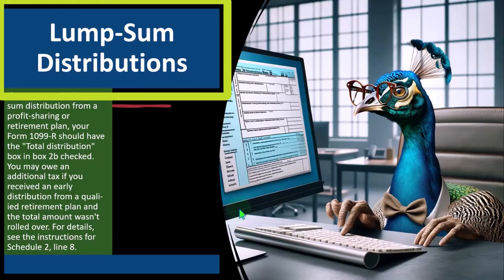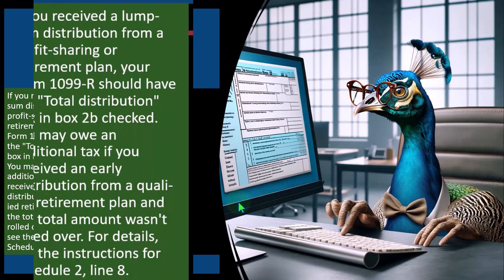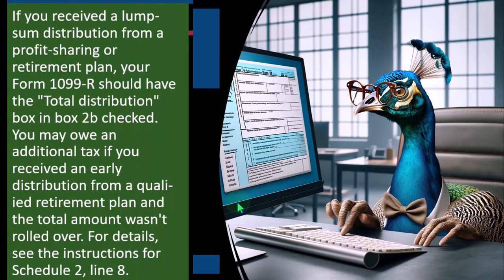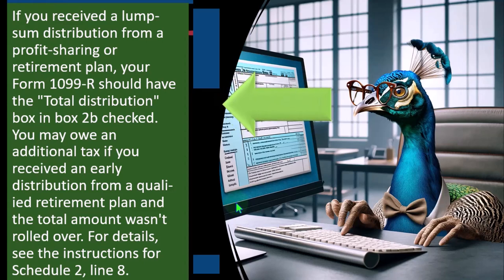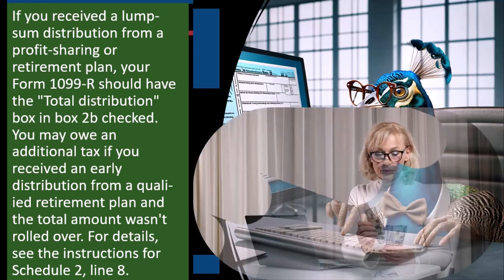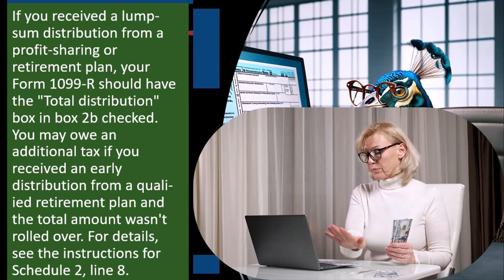Lump sum distribution. If you receive a lump sum distribution from a profit sharing or retirement plan, your Form 1099-R should have the "total distribution" box checked. You may owe an additional tax if you received an early distribution from a qualified retirement plan and the total amount wasn't rolled over. So in other words, if you got a lump sum amount pulled out, that could be indicated.